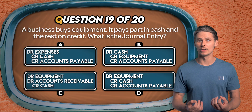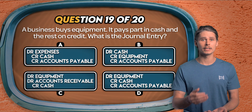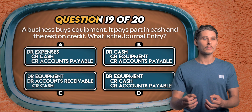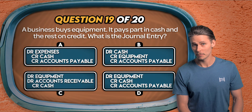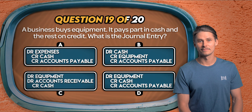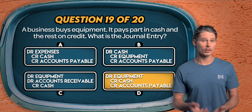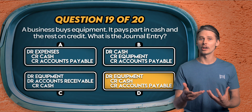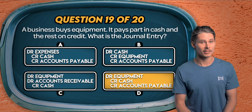Question 19. A business buys equipment and pays part in cash and puts the rest on credit. What is the journal entry? Is it debit expenses credit cash credit accounts payable, debit cash credit equipment credit accounts payable, debit equipment debit accounts receivable credit cash, or debit equipment credit cash credit accounts payable? It's D. This is a compound journal entry because it affects three accounts. We debit equipment to increase assets on the balance sheet, credit cash to decrease it, and credit accounts payable, which increases liabilities for the amount still owed.